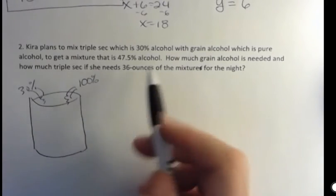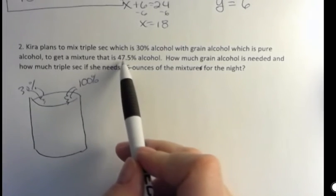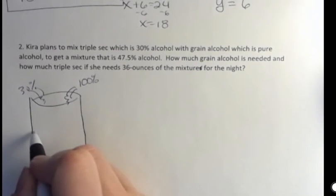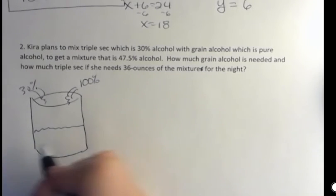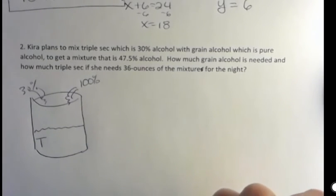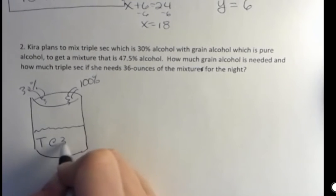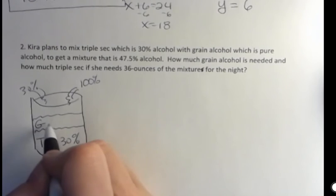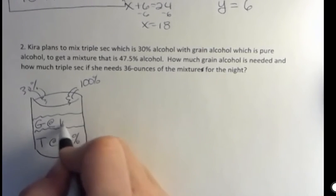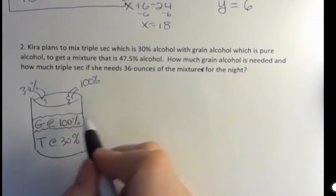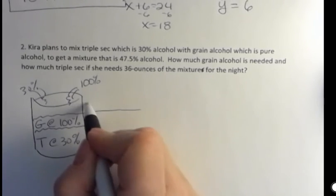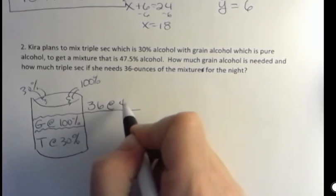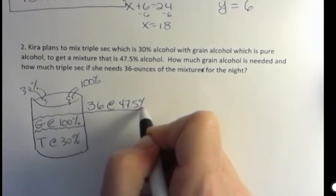She's going from 30 up to 47, but that's a lot closer than the 100. So again, I think we have more triple sec than grain alcohol. So I'm going to say that T is the amount of triple sec and that's at 30%. And G is the amount of grain alcohol and that's 100%. How much does she have altogether? Well, altogether she wants 36 ounces and she wants it to be 47.5% proof.